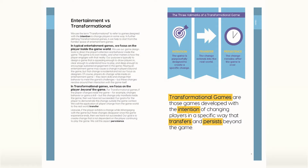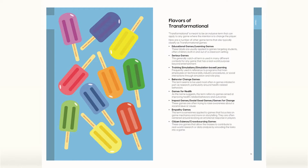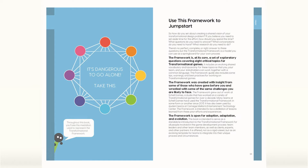First, it's important to point out that the book is about transformational games — games developed with the intention of changing players in a way that transfers and persists beyond the game. Transformational games are a beautiful form of applied game design, as they have a long-term focus on the player beyond the game world. There are many different types: educational games, empathy games, games for health. The book will give you a jumpstart into this field, and that's what the framework is about.